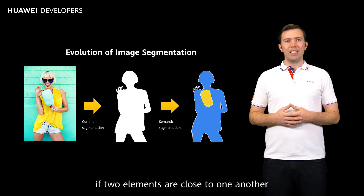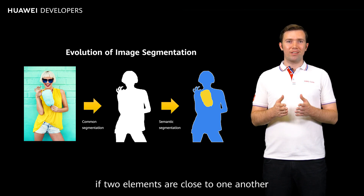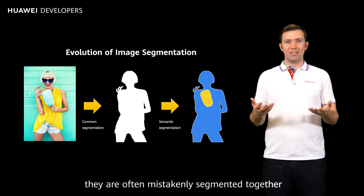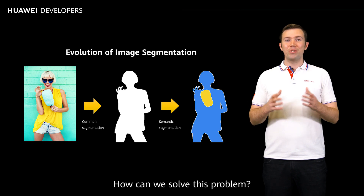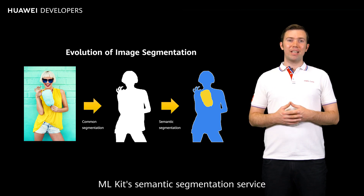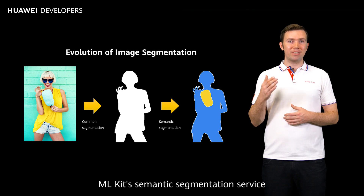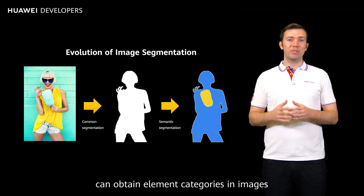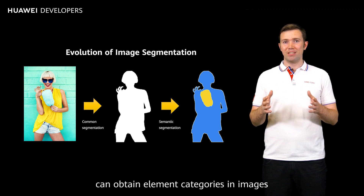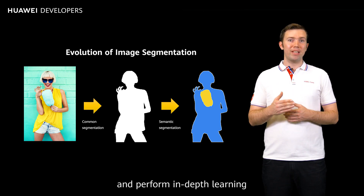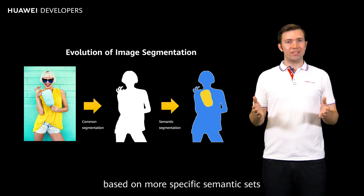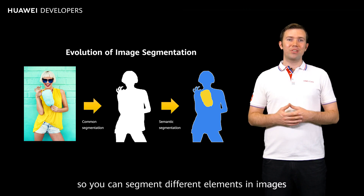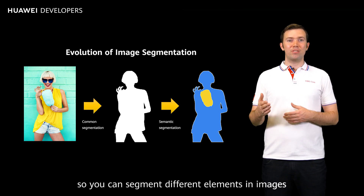As a result, if two elements are close to one another, they are often mistakenly cemented together. How can we solve this problem? ML Kit's semantic segmentation service can obtain element categories in images and perform in-depth learning based on more specific semantic sets, so you can segment different elements in images.